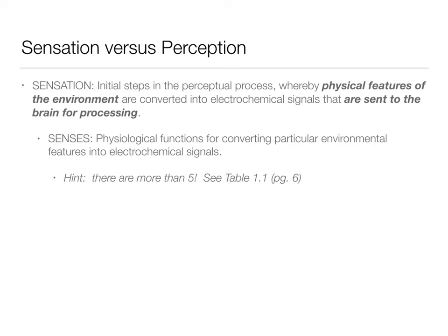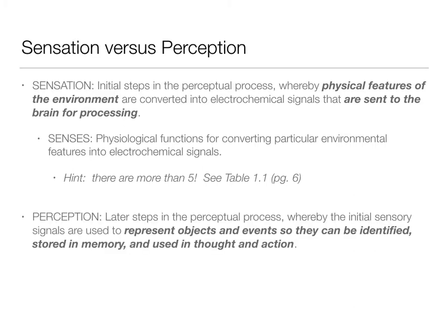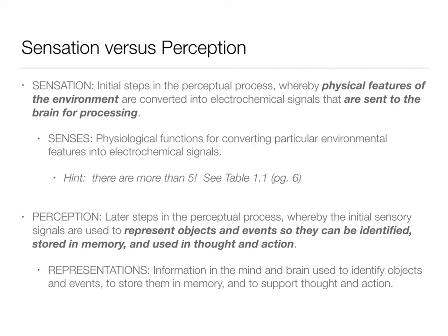There are more than the five senses that we learned in elementary school. Look at Table 1-1 on page 6 — it lists all the different human senses and also talks about which chapter we're going to discuss them in. That's a nice overview for where we're going to go. Perception is the next step in this process. It really involves that representation the brain comes up with of the information it got — a representation of objects and events so that we can identify them, store them, think about them, and pay attention to them. All of those kinds of higher-order cognition require these perceptions.